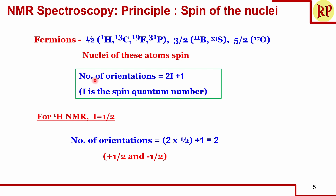The number of orientations for fermions is determined by the equation 2I + 1, where I is the spin quantum number. For NMR spectroscopy, I = 1/2. Substituting gives 2(1/2) + 1 = 2, so we have two orientations: plus half and minus half.